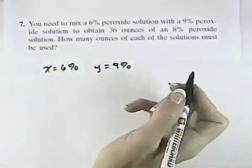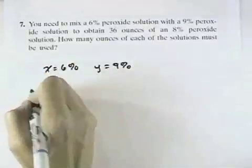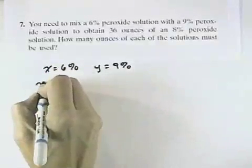So, step two, setting up our equations, we'd have that the solutions together, the amount of each, x plus y, should equal 36 ounces.